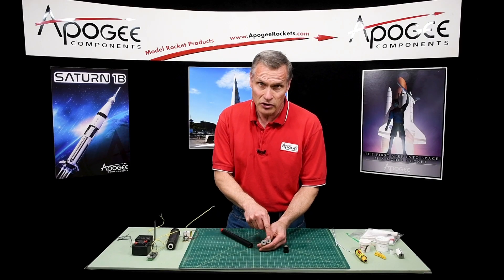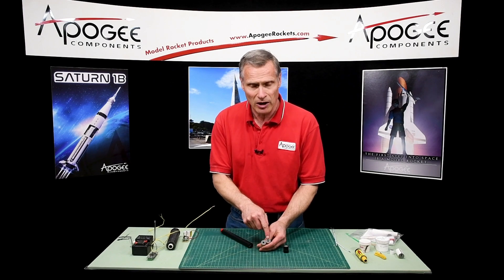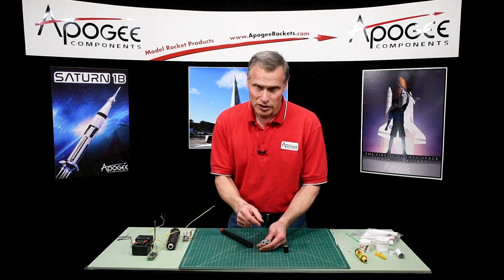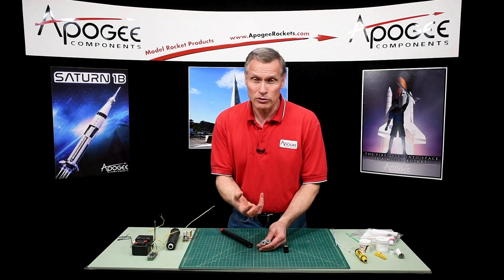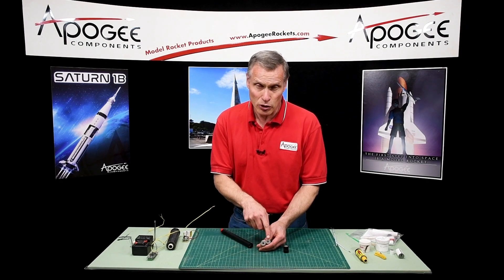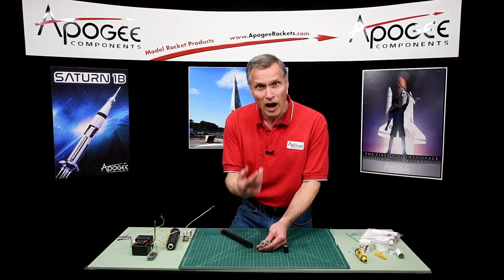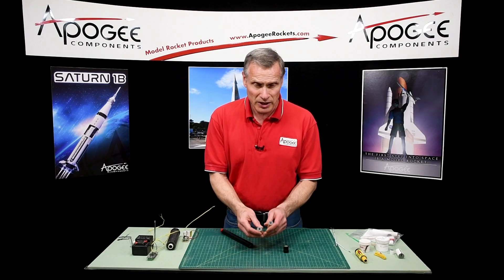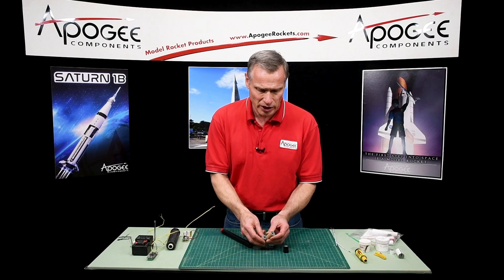So basically what they've done is they put a little bit of black powder inside of it as a chunk, a big chunk not loose black powder like an ejection charge but a piece that's going to burn nice and slow and hot and that's what ignites the propellant because composite propellant is very hard to ignite.